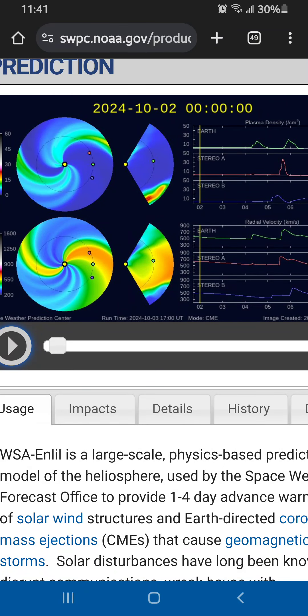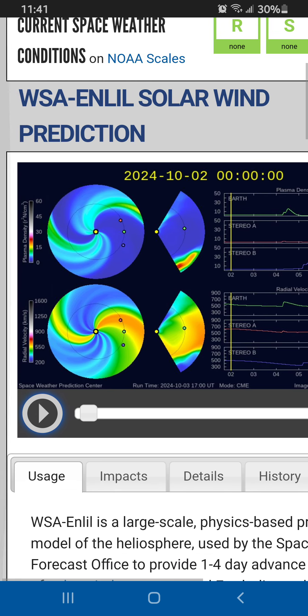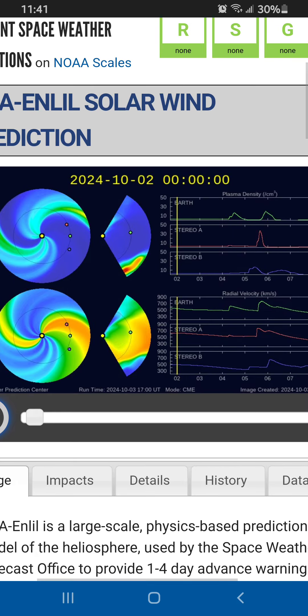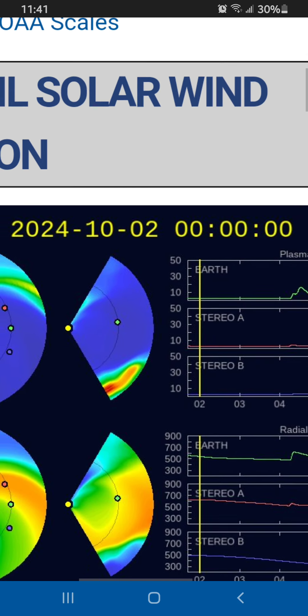The website swpc.noaa.gov. This is from the weather enthusiast solar wind prediction. Now you'll notice up here you see the time and date, that is UTC time.